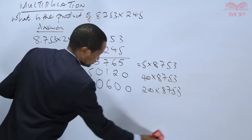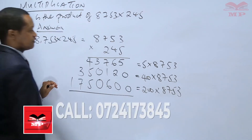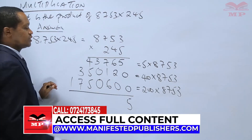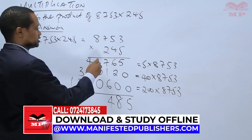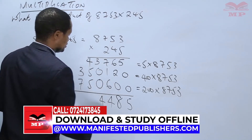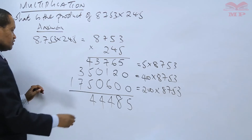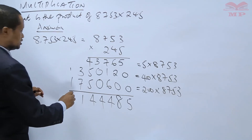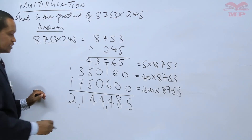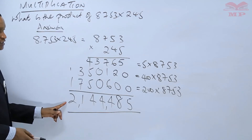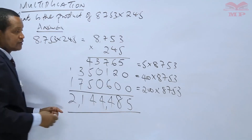That's how you do it. After multiplying, we add. 5 plus 0 plus 0 equals 5. 6 plus 2 plus 0 equals 8. 7 plus 1 plus 6 equals 14, write 4, carry 1. 1 plus 3 plus 0 plus 0 equals 4. 4 plus 5 plus 5 equals 14, write 4, carry 1. 1 plus 3 plus 7 equals 11, write 1, carry 1. 1 plus 1 equals 2. So the answer is 2,144,485 — this is the product of 8,753 and 245.